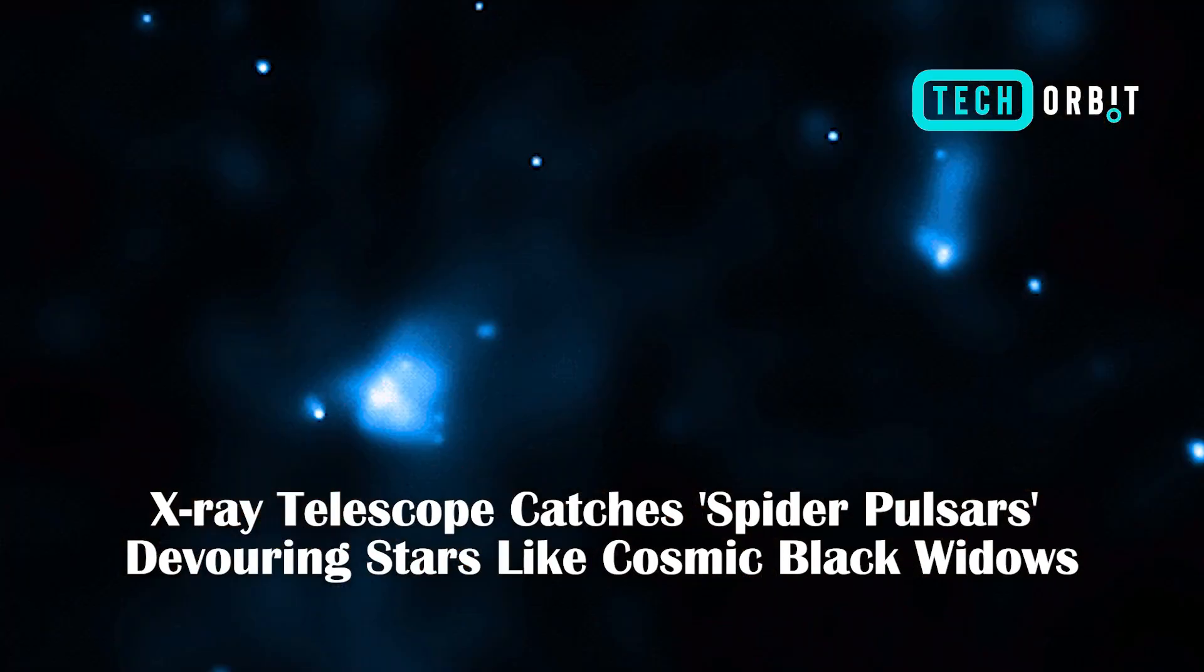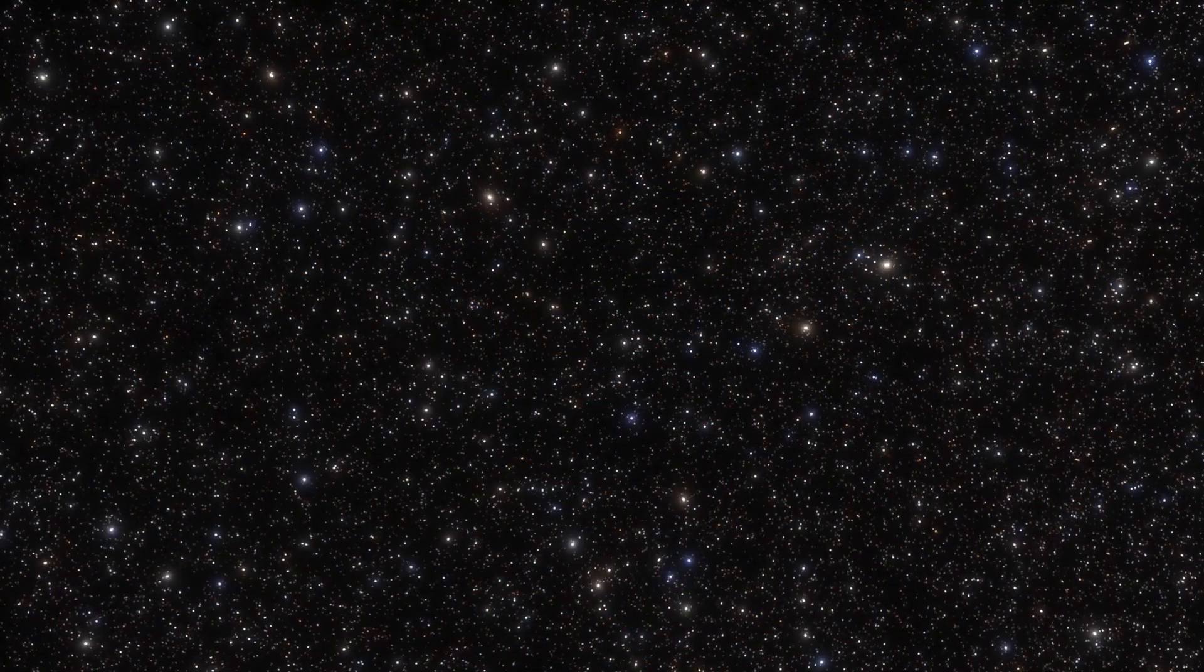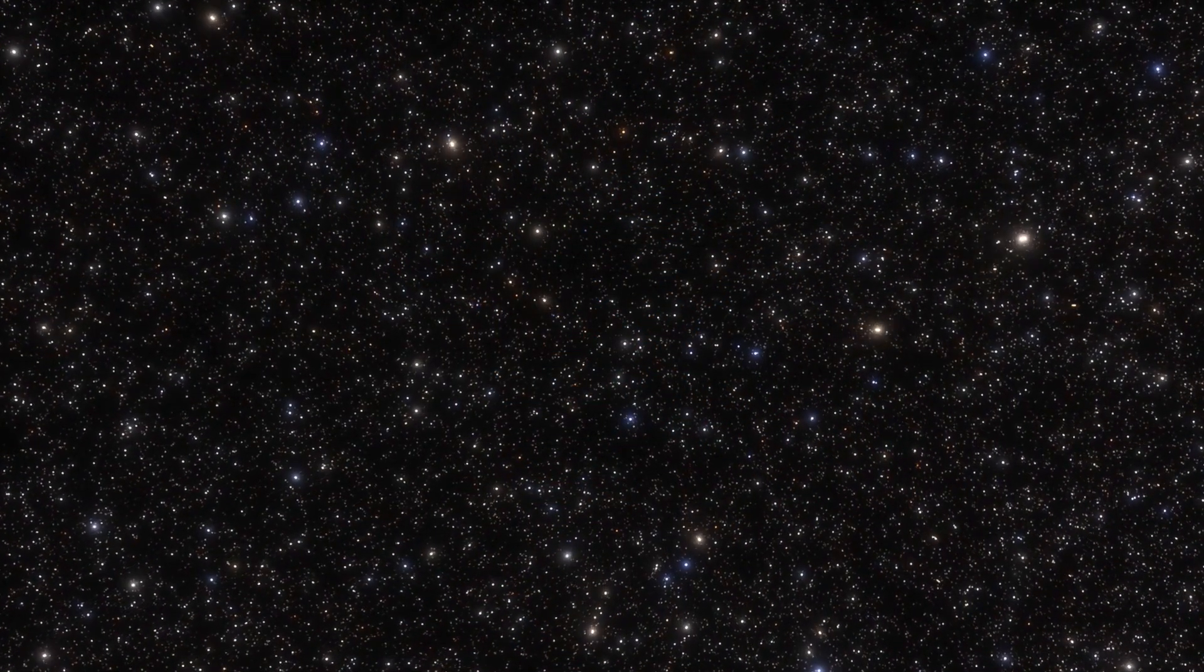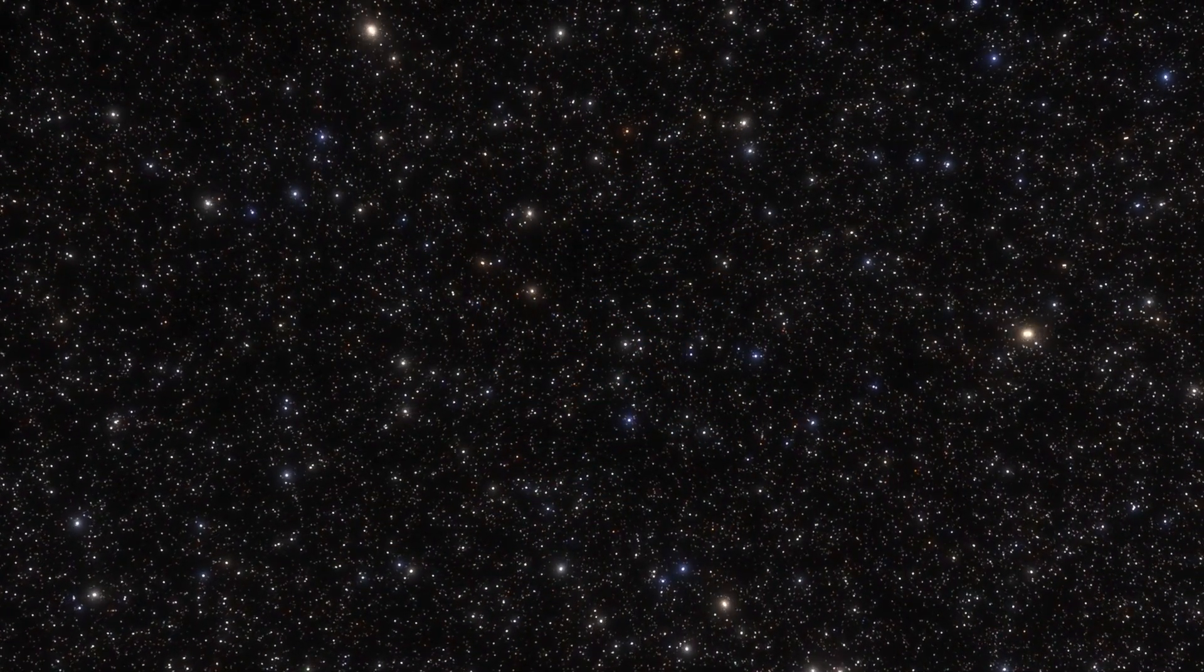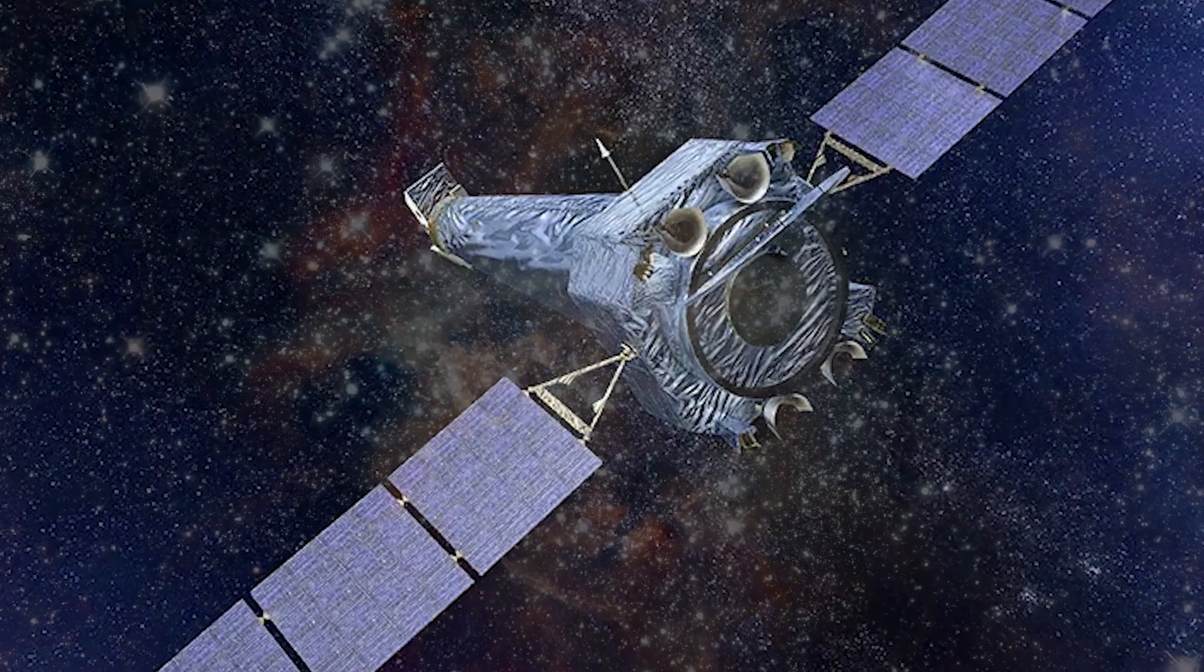X-ray telescope catches spider pulsars devouring stars like cosmic black widows. A cluster of spider pulsars in the Omega Centauri globular cluster have been observed by NASA's Chandra X-ray Observatory consuming their companion stars.